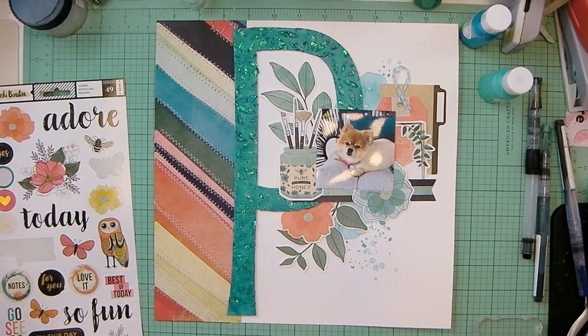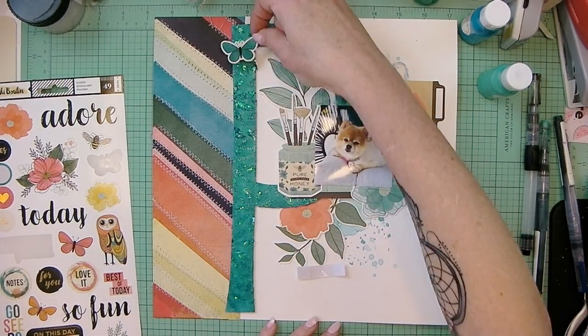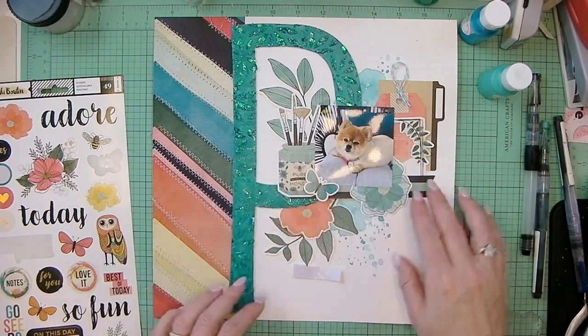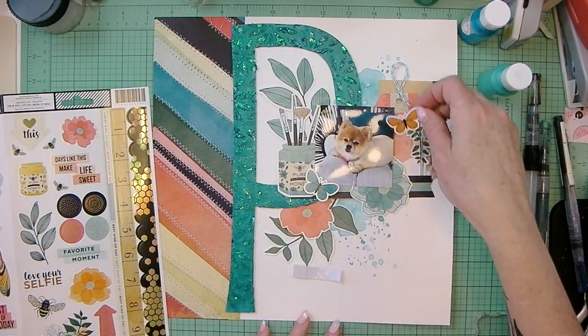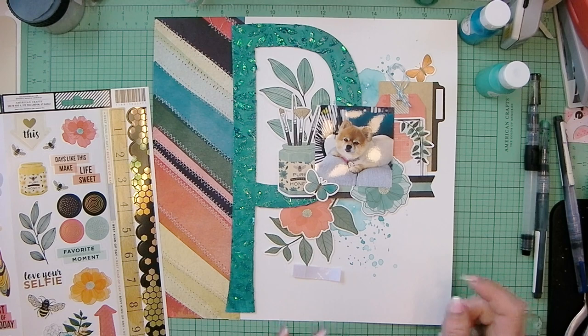I love that dark teal butterfly and I'm going to add that with a foam dot. Notice I'm pointing it towards Peanut. When I finally decide where, there it goes, that's a good place because it points to his face. Then I use the orange one up here at the top right to kind of balance the layout.